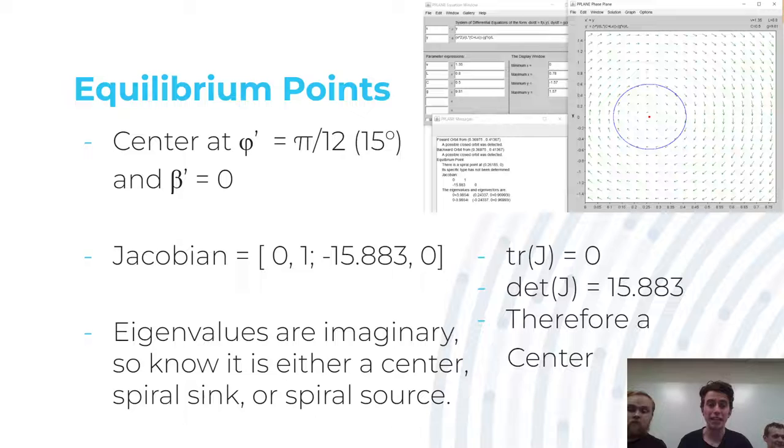So now that we are jumping into the equilibrium point, it's not surprising that it is at a phi value of 15 degrees and a beta value of zero, which makes sense in terms of our problem. P-plane actually pointed this out as a spiral, but when we look at the Jacobian and calculate the trace and determinant, we can therefore see it's actually a center, which makes more sense, or an orbit, which makes sense with the graph we are getting from this value. We could have also looked at the eigenvalues and seen how they are imaginary, so we know it's either a center, a spiral sink, or a spiral source.